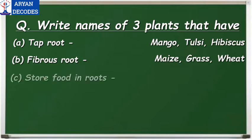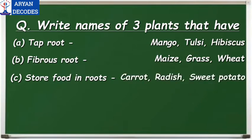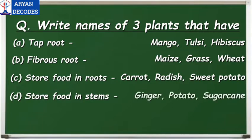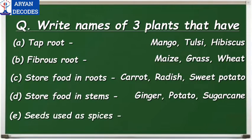Next, store food in roots — the answer is carrot, radish, and sweet potato. Next, store food in stems — the answer is ginger, potato, and sugarcane. And the last is seeds used as spices — the answer is cumin, coriander, and mustard.